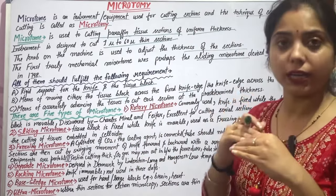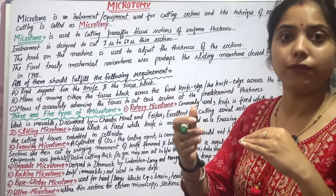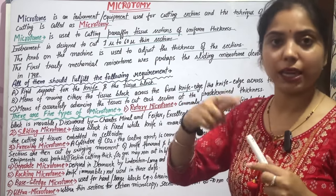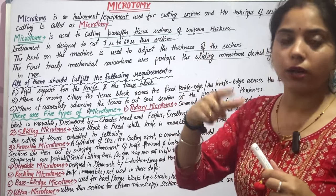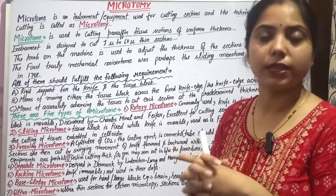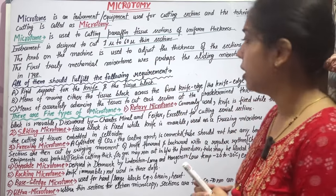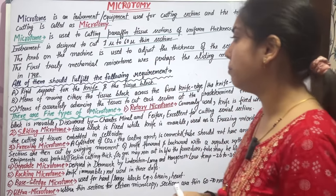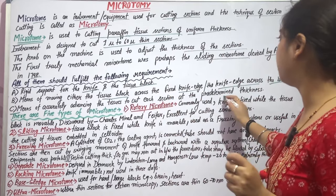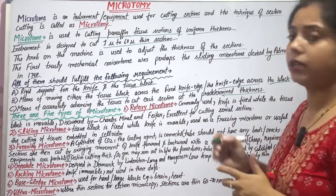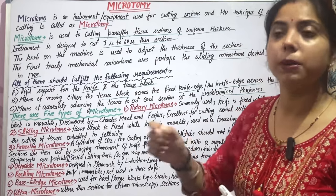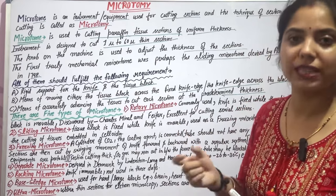If the tissue block rotates, the knife will be fixed. The block rotates and goes up to the top, then the knife cuts through. Additionally, there must be means of advancing the tissue to cut each section at a predetermined thickness, which can be adjusted beforehand.